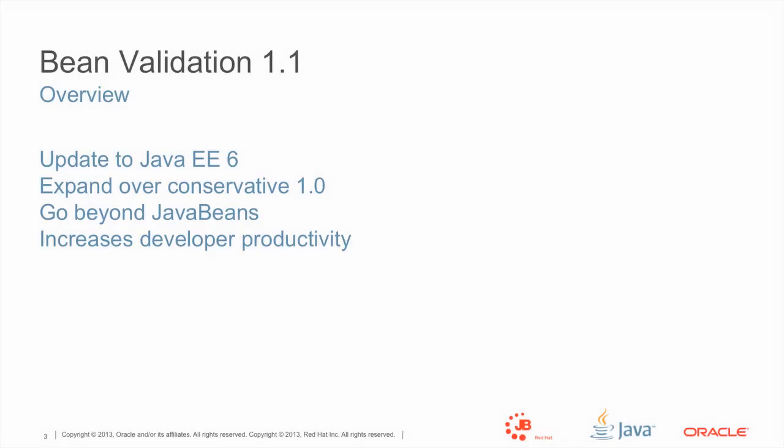Bean Validation 1.1 had two focuses. One was to really start from version 1.0, which was a bit conservative — that was our first implementation and we wanted to be safe. Version 1.1 really complemented the existing features, added a few extra capabilities, and fixed a few bugs. The other branch was really to explore validating not only properties of objects but go beyond that. And as part of Java EE 7, we worked hard to improve integration between our specification and the other specifications.